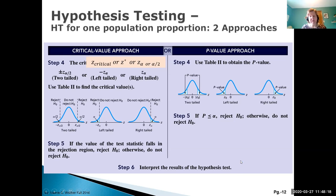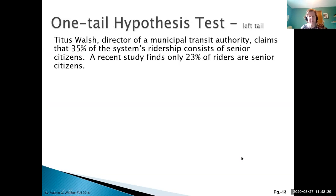Let's review a couple of scenarios — we won't solve them completely; we'll do full examples in subsequent videos. Here we have a director of a municipal transit authority claiming that 35 percent of the system's ridership consists of senior citizens. A recent study found only 23 percent of riders are senior citizens. How do we know this is a hypothesis test question? We have a claim, and a study showing something else may be happening.